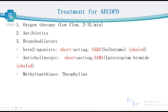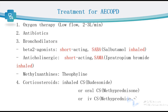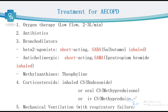Please pay attention: for AECOPD, we must choose short-acting bronchodilators, including SABA and SAMA. For AECOPD patients, we cannot choose long-acting bronchodilators. Fourth, corticosteroids are required for AECOPD patients, either inhaled or systemic, and we choose the administration route according to the severity of dyspnea. Fifth, mechanical ventilation is required for patients with concurrent respiratory failure.